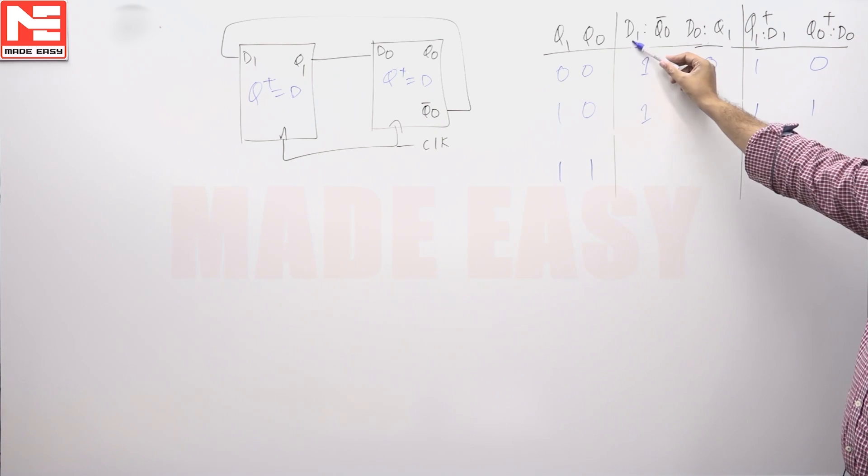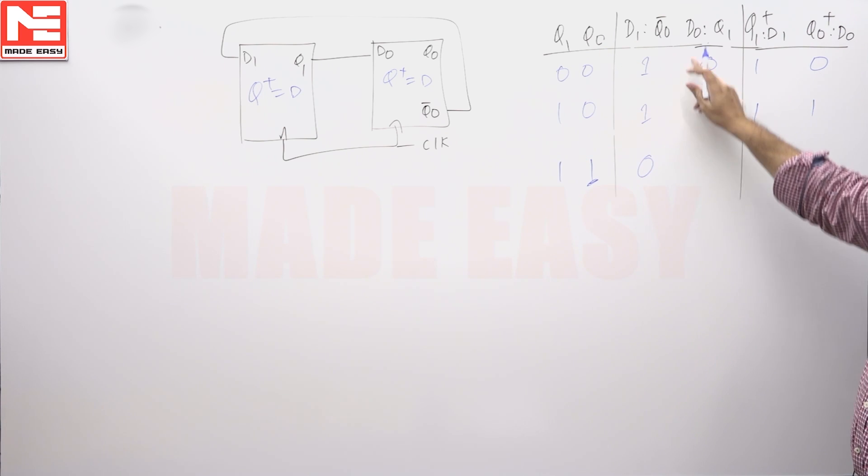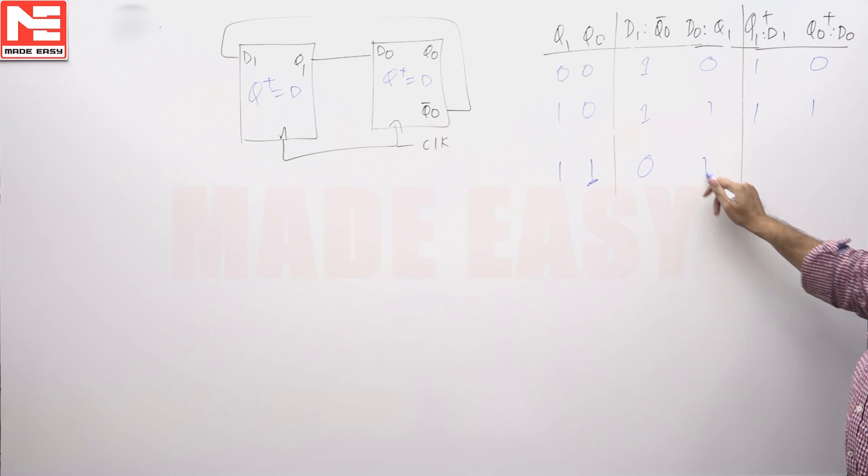So D1 is equal to Q naught bar. Q naught bar, see Q naught is 1 here, Q naught is 1 here, so Q naught bar is 0. D naught is Q1, Q1 means this is 1, so this is going to be 01.